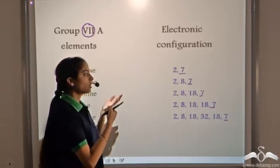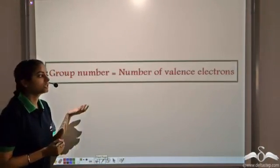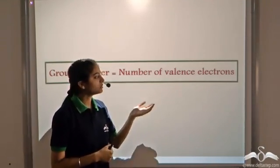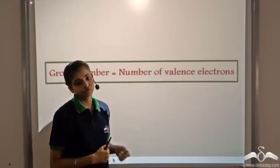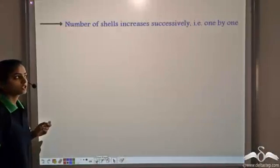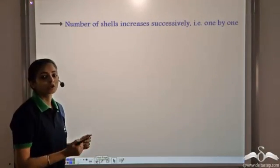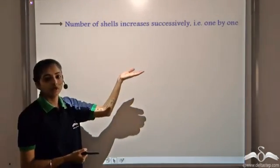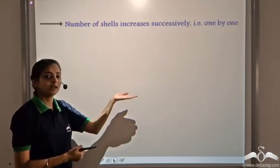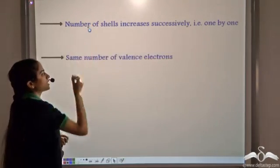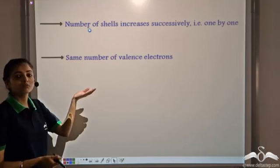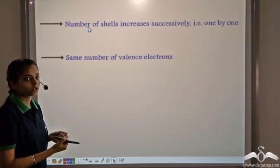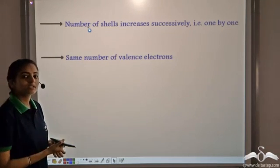So here we saw a particular trend: the group number is equal to the number of valence electrons in each case. So for all the elements in the periodic table, elements belonging to a particular group have an equal number of valence electrons. Also, the number of shells increases progressively — one by one. The first element has one shell, the second element two shells, and so on.